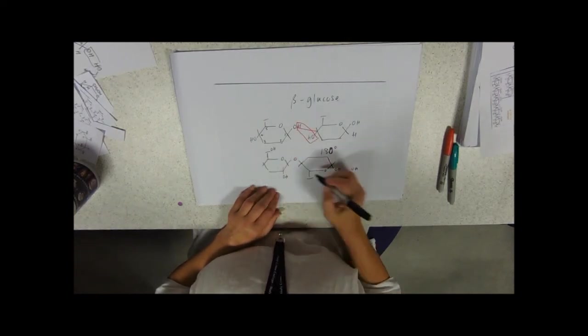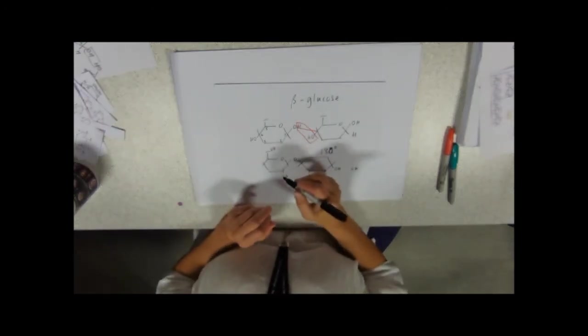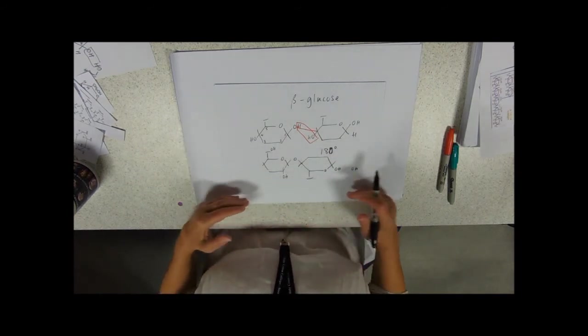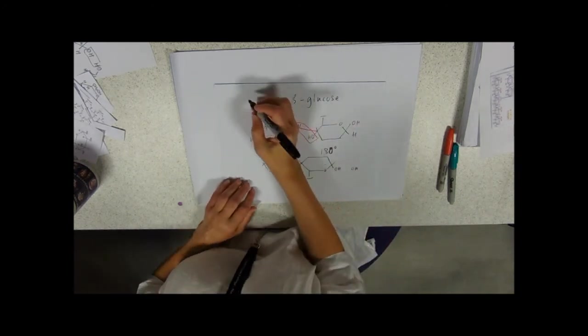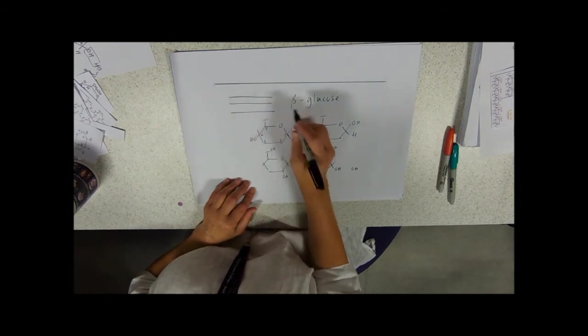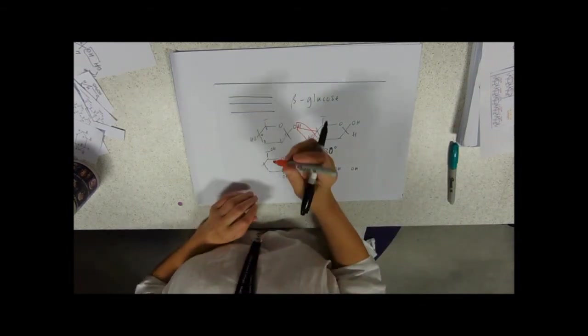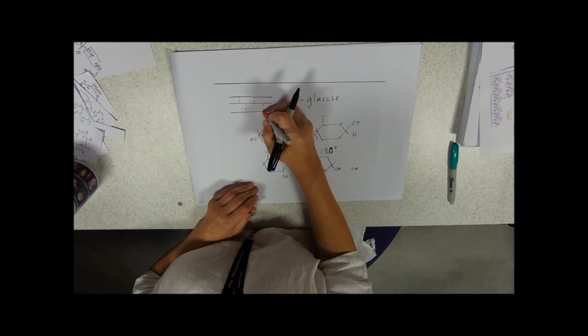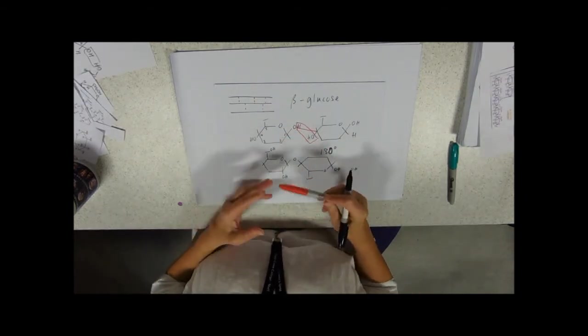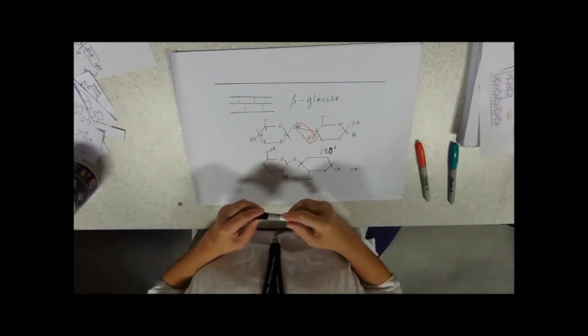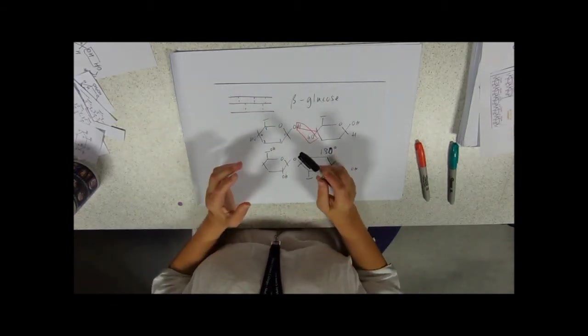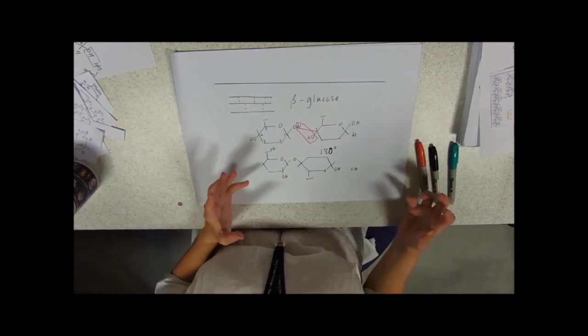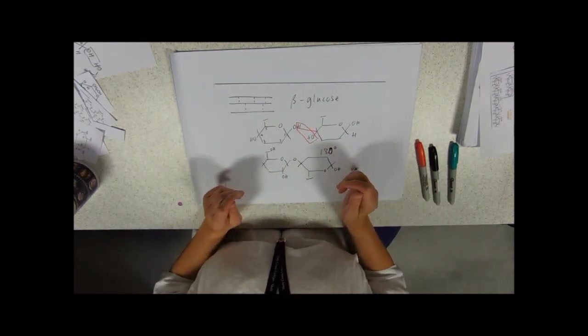And because we've got OH groups on either side of the molecule, they can then form hydrogen bonds with adjacent molecules. So what we're talking about is making strands in straight lines, and then where we've got OH groups, forming hydrogen bonds across. So this is going to confer because of the number of hydrogen bonds, a lot of strength on the molecule. And so in cell walls, this is going to be a very strong compound, and it's going to prevent, because it's on the outside of the cell, as the cell takes in water, it's going to stop it bursting. We call that osmotic lysis.